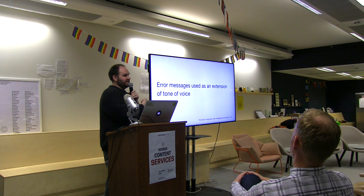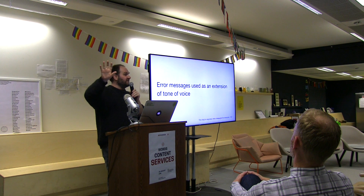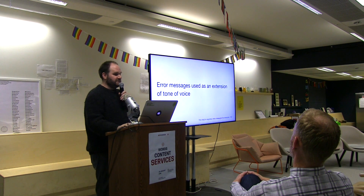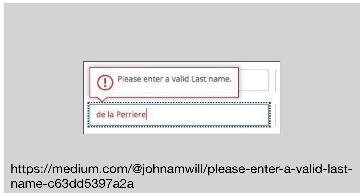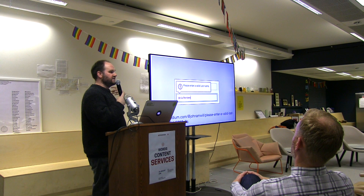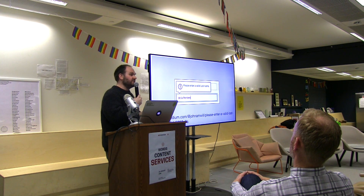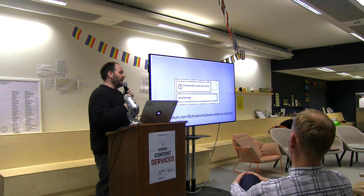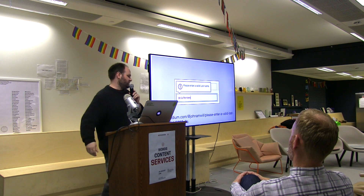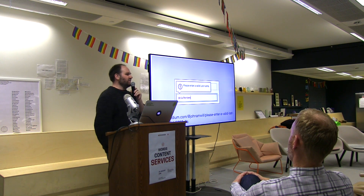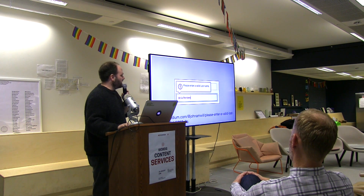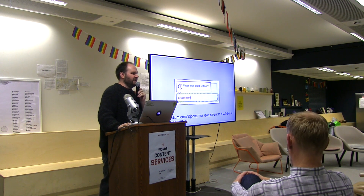I've got so many examples of this because every time I do one of these talks I start getting Slack messages and Twitter messages saying 'look at this.' Here's a few. There's a field for your last name and the error says 'please enter a valid last name' because someone put in spaces. I have a person who sits behind me — Mark O'Connor — who gets this all the time because he's got an apostrophe in his name. I know when it happens at work because he slams the lid on his Mac and storms off. Can you imagine what telling someone their name is not valid means to them?